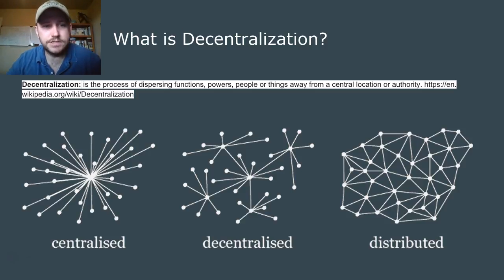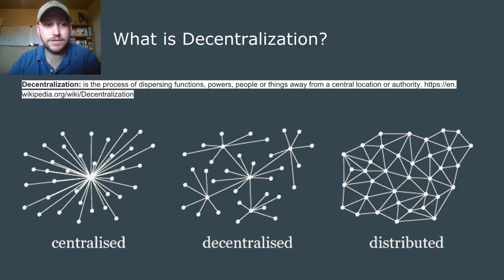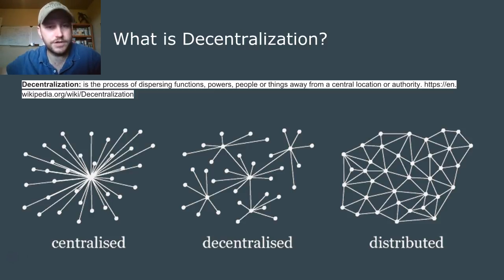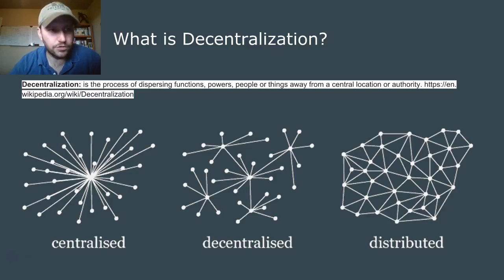Going back to the description where decentralization is the process of dispersing functions, powers, or people or things — in a technology system, what we're doing is saying these functions of the entire system are encapsulated in one node, and it can be replicated a multitude of times. This provides scalability and availability, so you can't shut the system down or stop it. You're dispersing the functions and the span of control — the power — to a multitude of nodes that aren't just in your control; they're in your and everyone else's control who participates in the system.